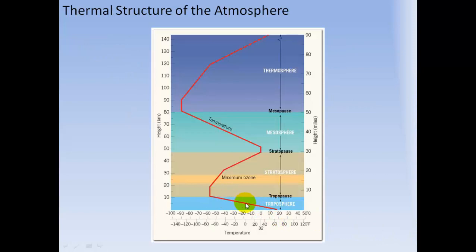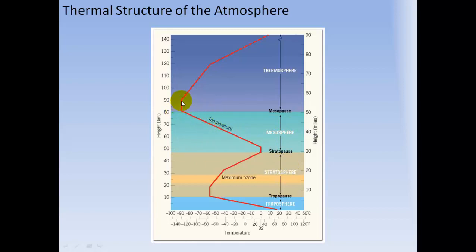In the atmosphere diagram: the troposphere is where all our weather occurs and temperature decreases as you go up. The tropopause is the break before the stratosphere, where ozone is located and temperature stays about the same before warming above the ozone layer. Then comes the stratopause dividing the stratosphere from the mesosphere. The mesosphere sees temperature drop again, with a mesopause boundary, before warming in the thermosphere, which gradually peters out into open space.